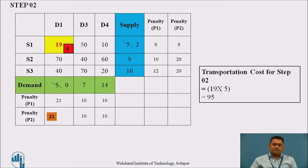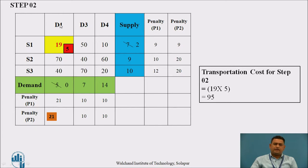Now, with D2 eliminated, we find the second penalties. For the first row it is 9, for source S2 it is 20, and for source S3 it is 20. For columns D1, D3, and D4, the penalty is 20. Out of all second penalties, the highest is 21, lying in the D1 designation. In D1, the costs are 40, 70, and 19 — the smallest is 19, which lies at source S1. We balance the supply and demand; D1 is satisfied by source S1. The transportation cost for step 2 is 19 into 5, which is 95.